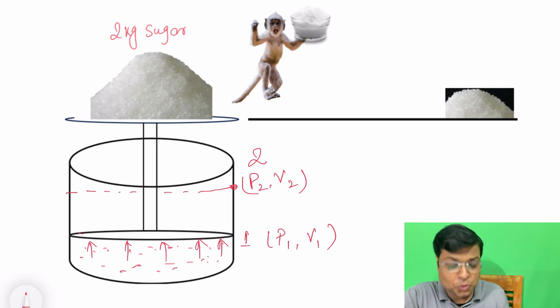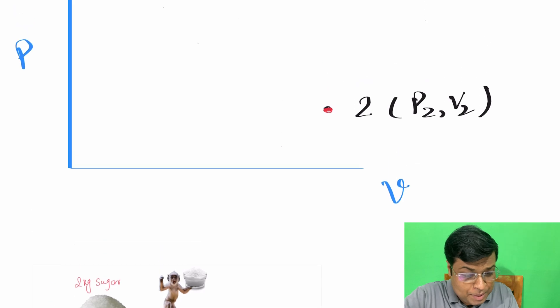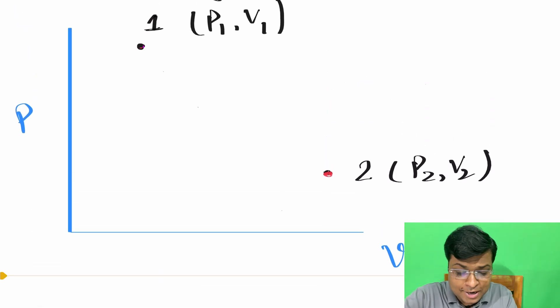Suppose this is state 2. So if you want to see this process on PV diagram, you can show it here like this: 1 and 2. This is state 1 and state 2.